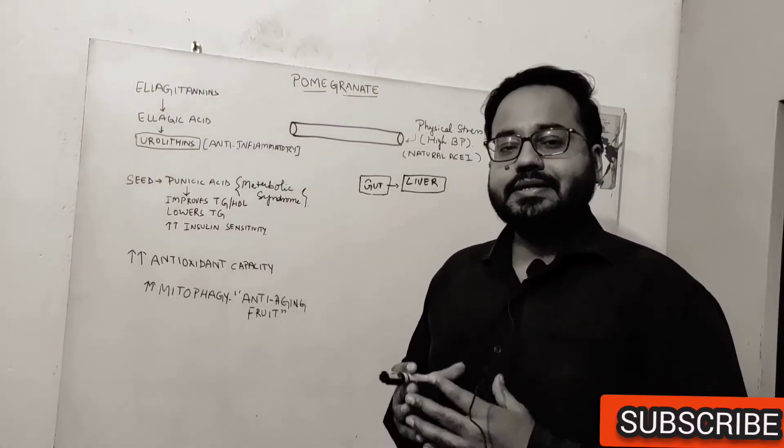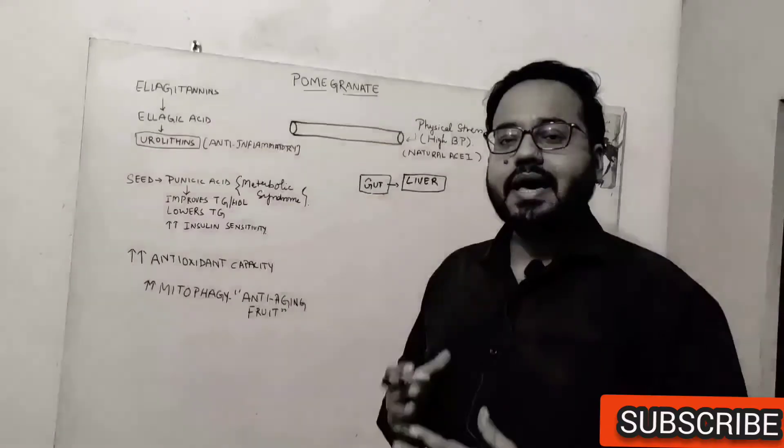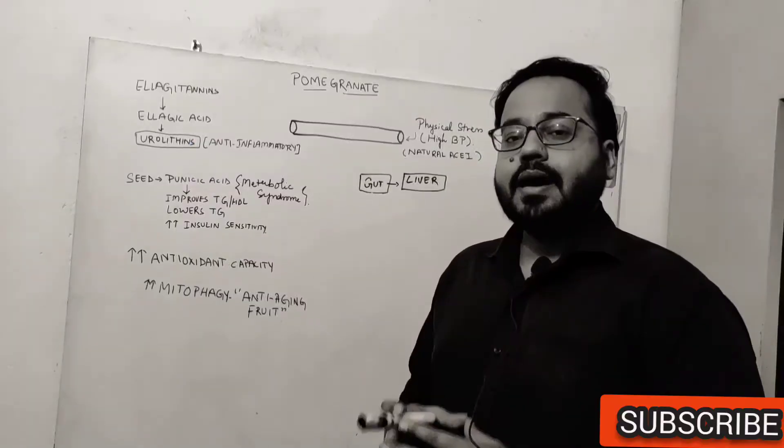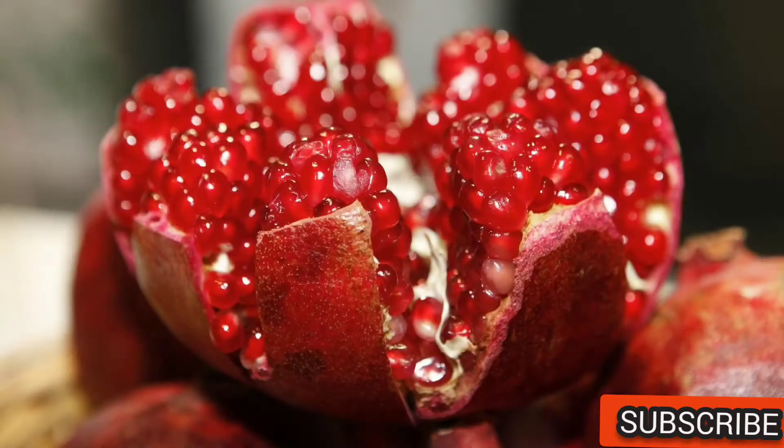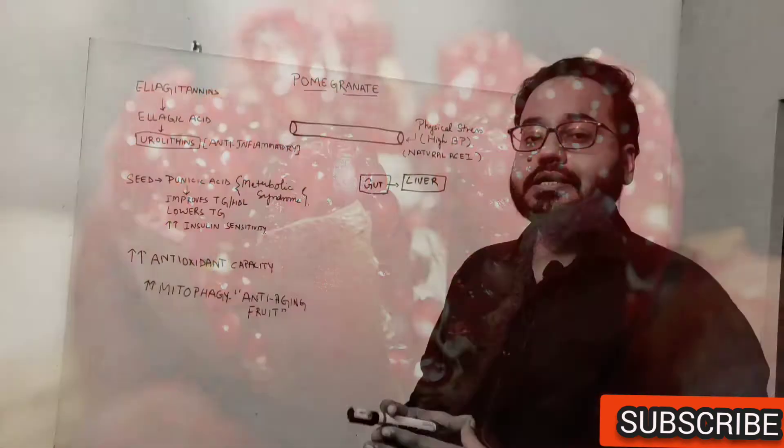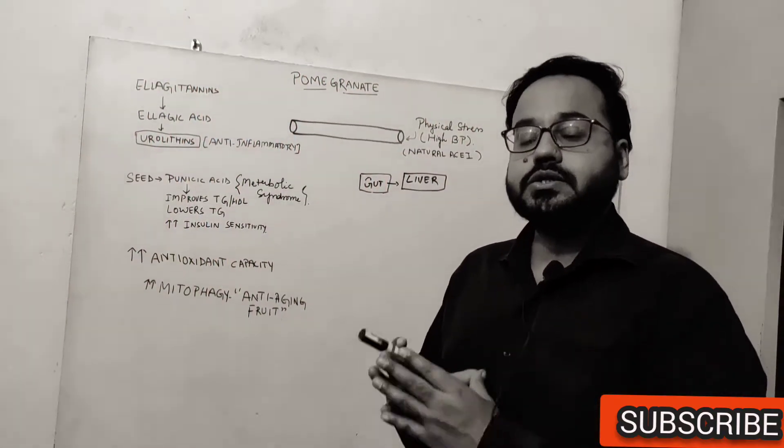We are going to talk about the fruit that will help in unclogging your arteries and reversing heart diseases. I'm talking about pomegranate. Now this is the fruit that you should be eating on a daily basis in order to prevent heart diseases and reverse atherosclerosis.